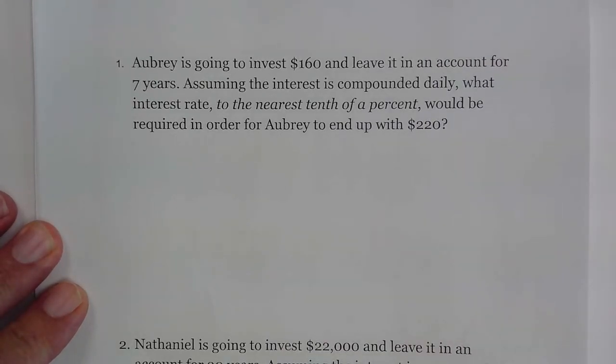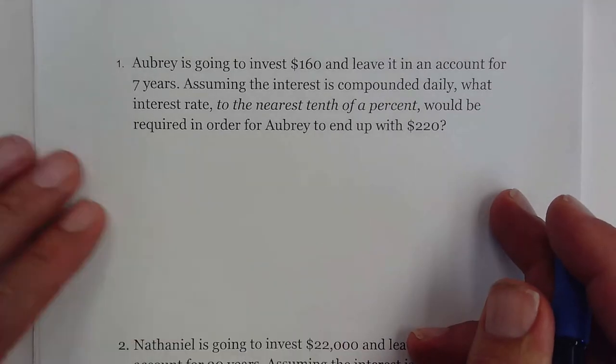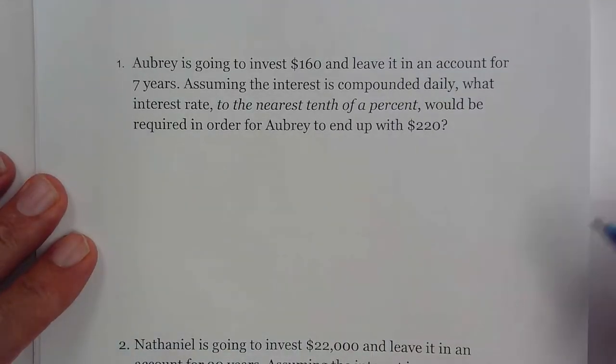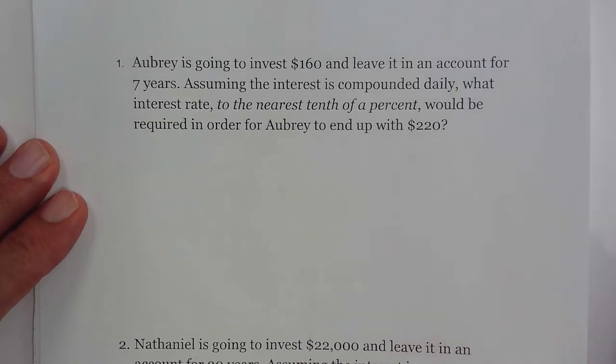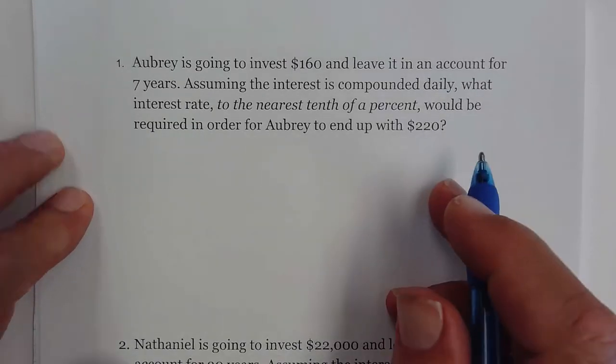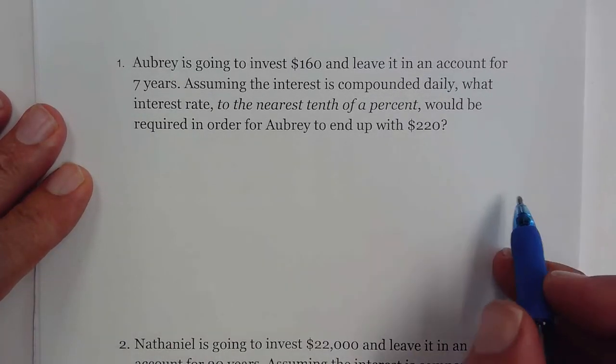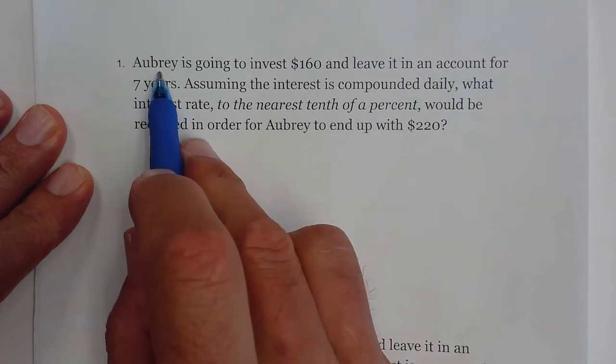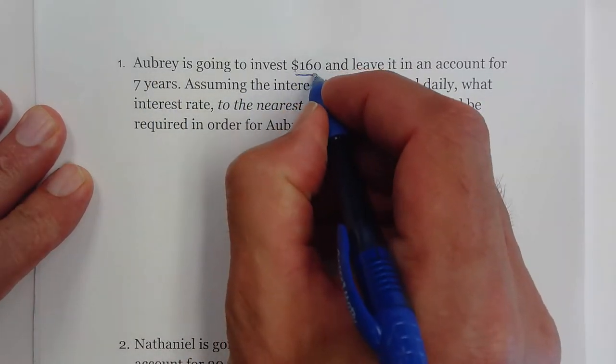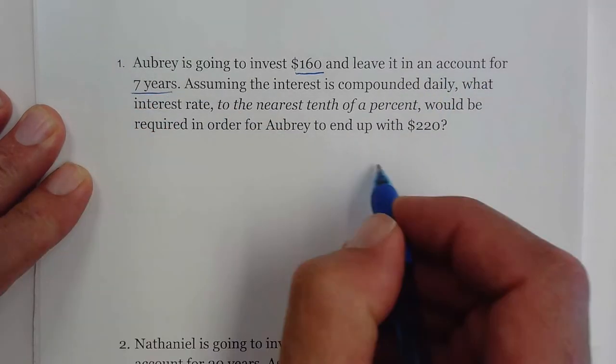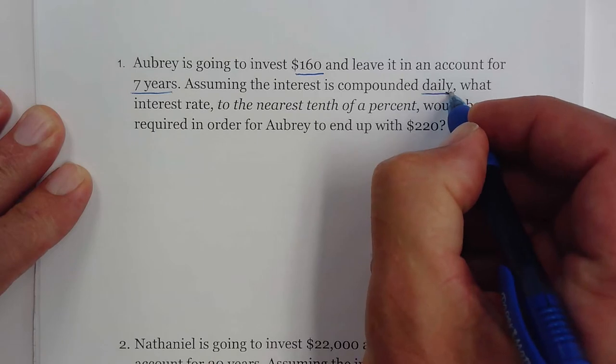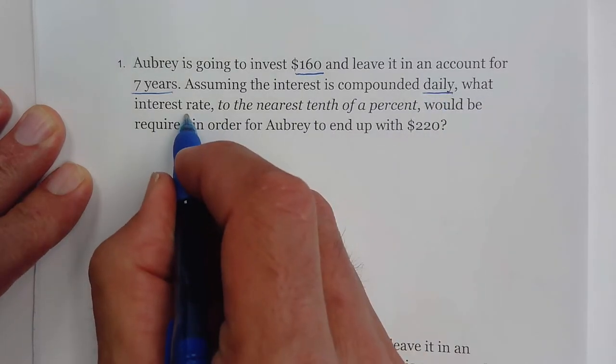Alright, Algebra 2B, this is day two of the compound interest formula. These problems today take a little bit more finesse than the previous day, so please pay close attention. This first question says Aubrey is going to invest $160 and leave it in an account for seven years, assuming that it's compounded daily. What interest rate, to the nearest tenth, would be required for her to end up with $220?